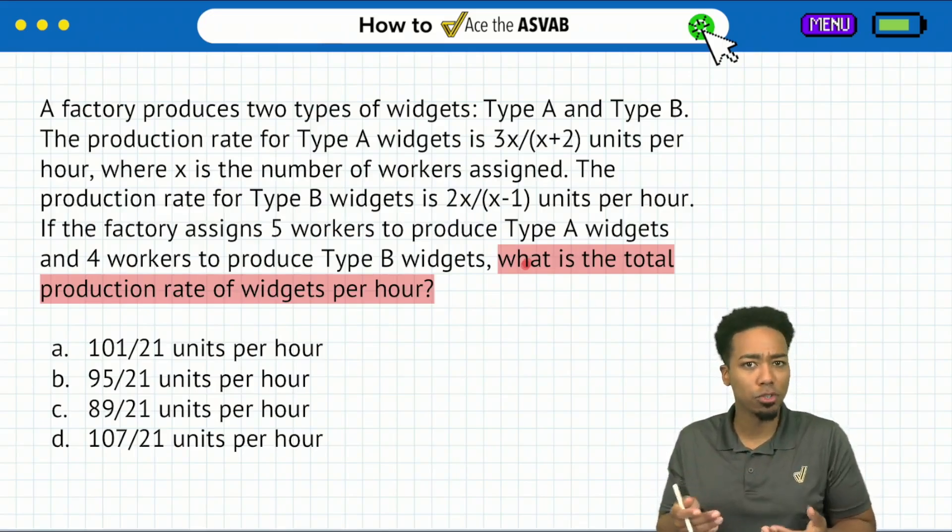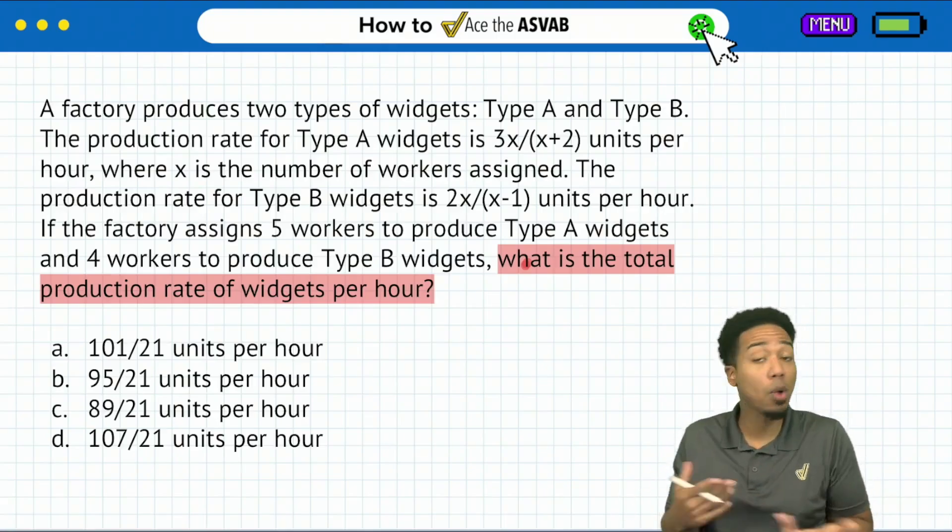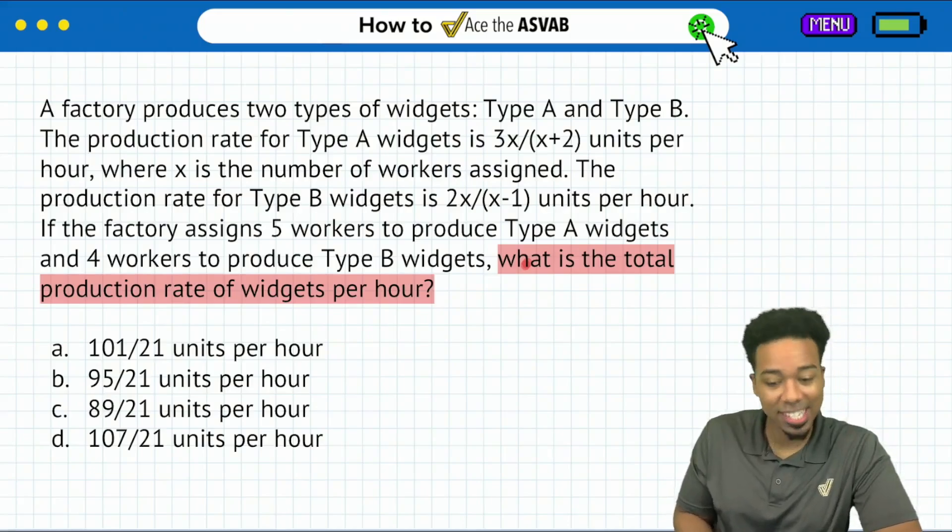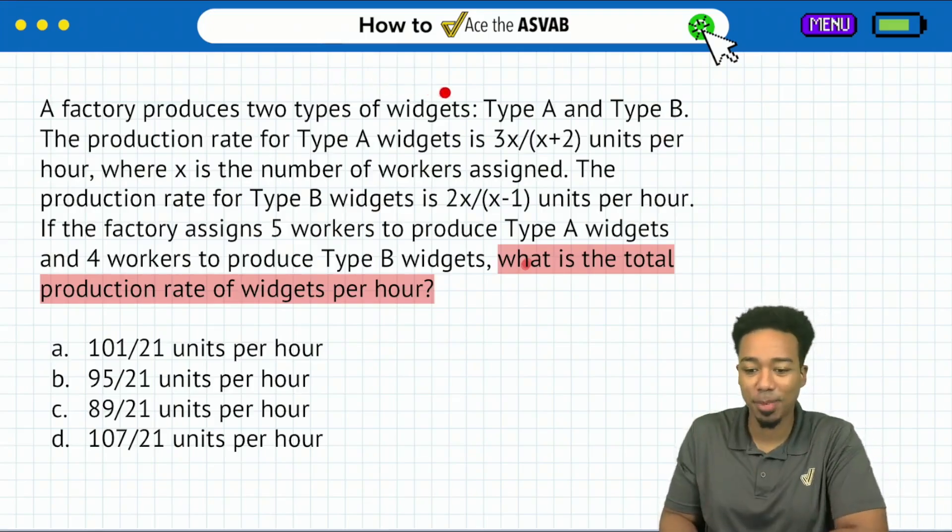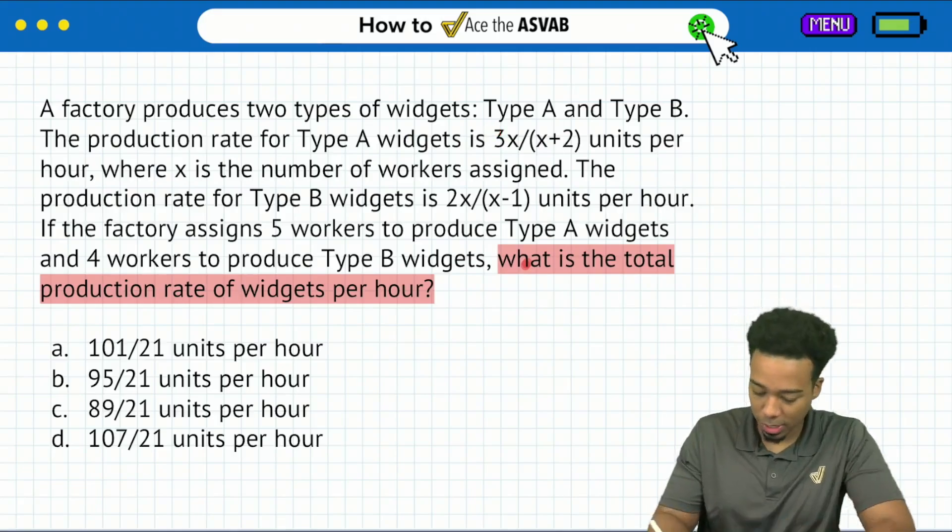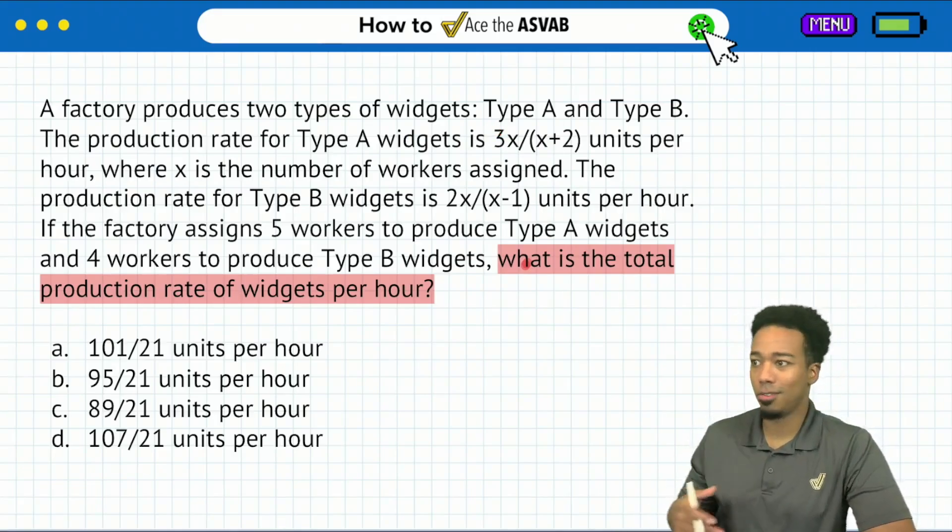So let's read through the information so we can understand production rates of these widgets and see how we're going to add them together. So here in the beginning now, we see that it says a factory produces two types of widgets. Of course, we saw A and B. So it says type A and type B.